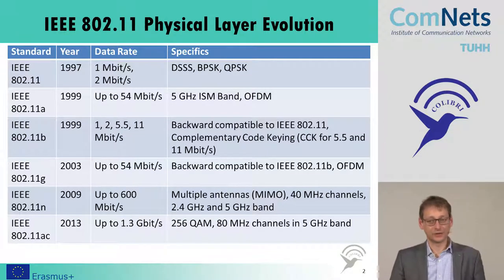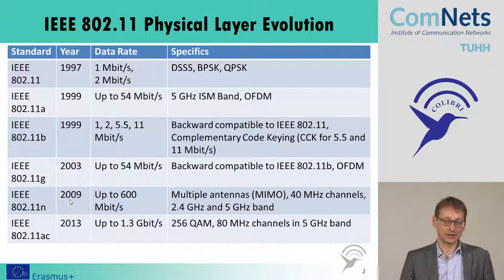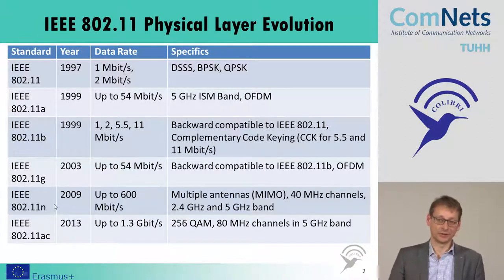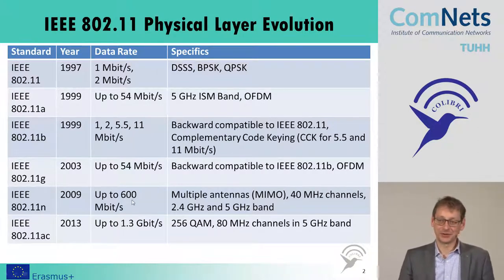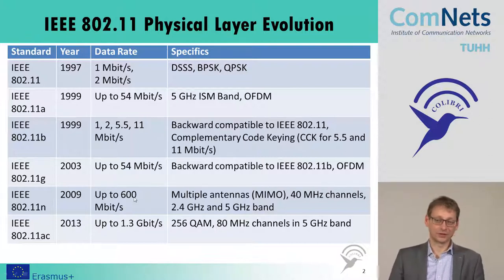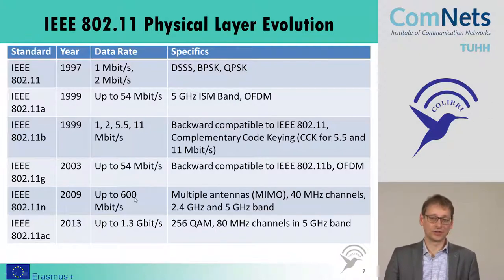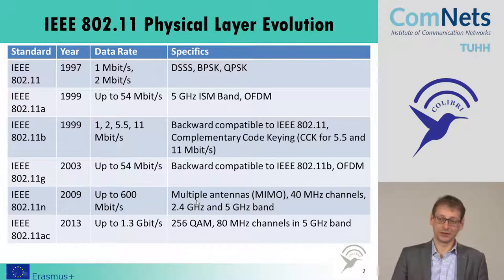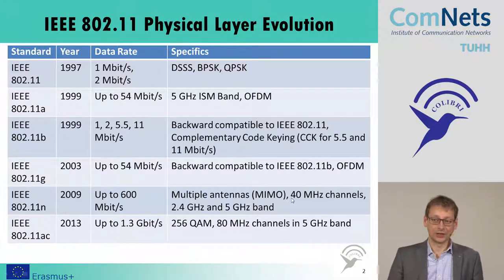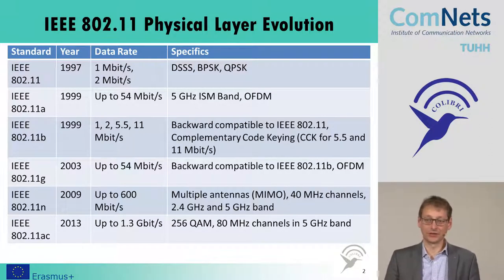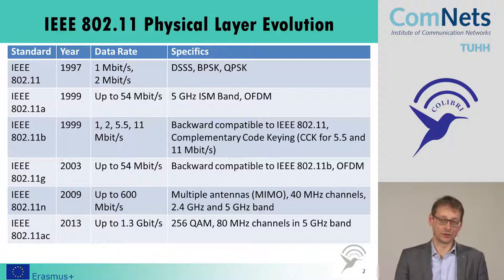The next evolution came a couple of years later, in 2009, when they finally standardized the 802.11n. There were some previous pre-N devices on the market because there were problems agreeing on how to reach 600 megabit per second. It uses multiple antennas to better exploit the radio channel, operates on both 2.4 and 5 GHz bands, and also allows combining two channels to have 40 MHz channels instead of 20 MHz channels — this dispute was what caused the late standardization.